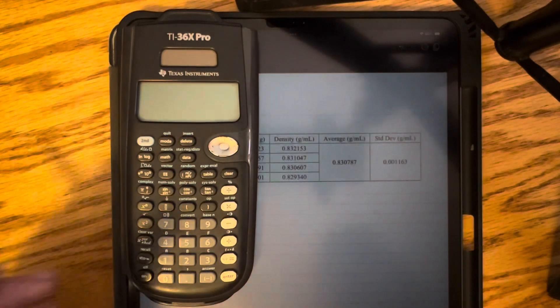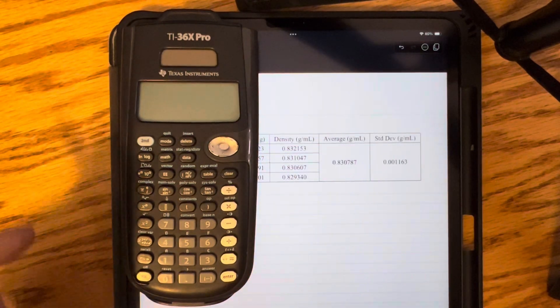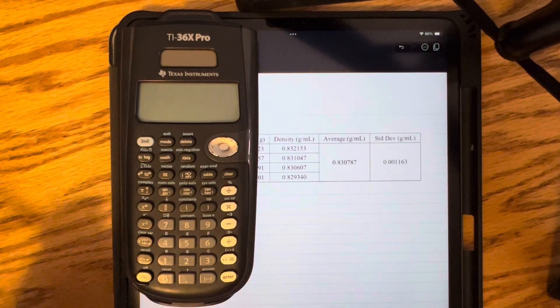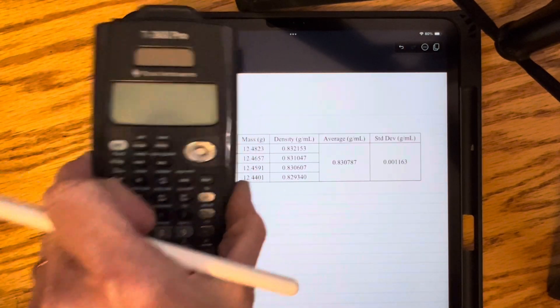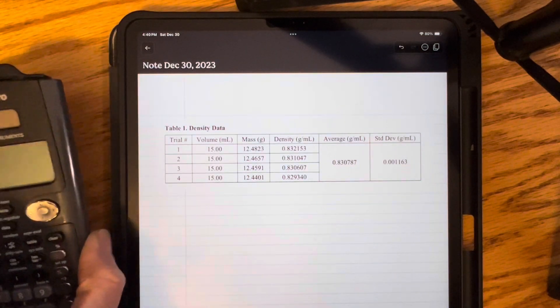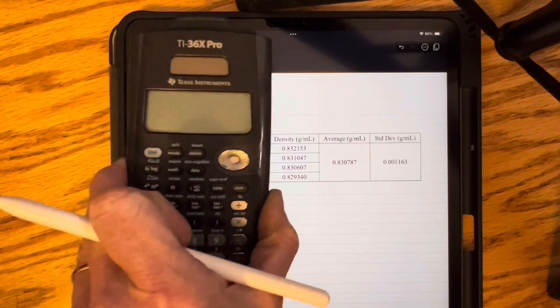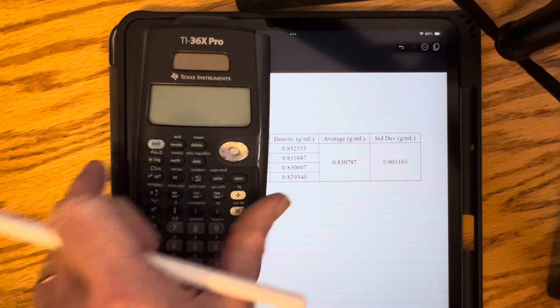In this video, I will show you how to use a TI-36X Pro calculator to find the average and standard deviation of a set of data. I'm just using this example density data from Experiment 1a, and here is my calculator.